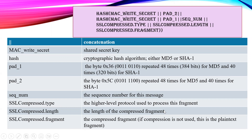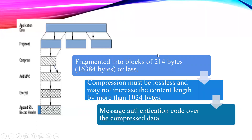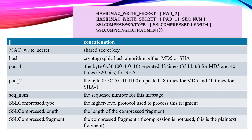SSL compress dot type is a higher-level protocol field used for each fragmentation block — it tells which kind of block it is and what type of protocol it is following. SSL compress dot length is the length of the fragment, where each block is 2 to the power of 14 bytes. SSL compress dot fragment indicates whether it is compressed data or plain text placed on the application layer.